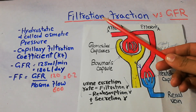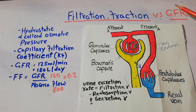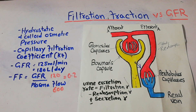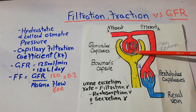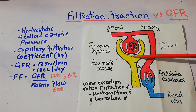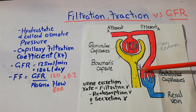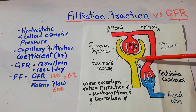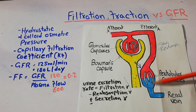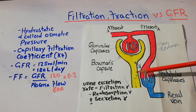Today we are going to talk about the filtration fraction and the GFR, the glomerular filtration rate. As we have started discussing the urine formation process, there are a lot of steps involved. They include the filtration of blood at the level of the glomerulus, then the filtrate moves through the nephron tubules. The second step is reabsorption, in which some of the filtrate is reabsorbed into the peritubular capillaries, and then secretion.